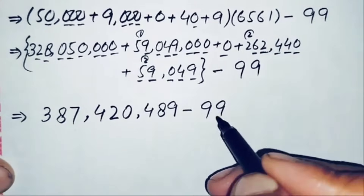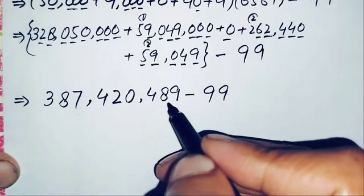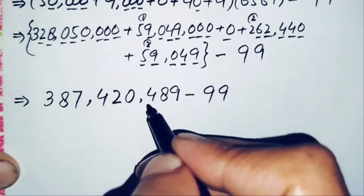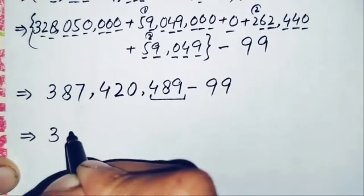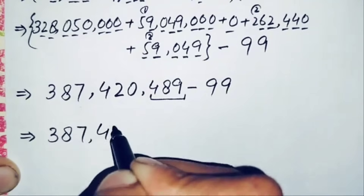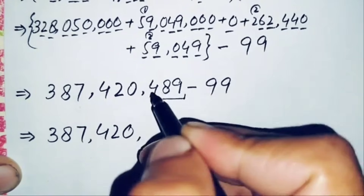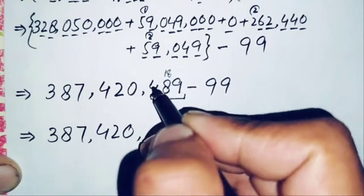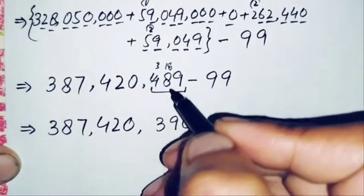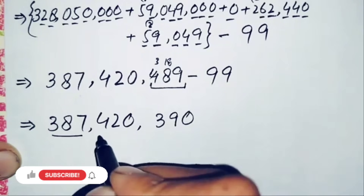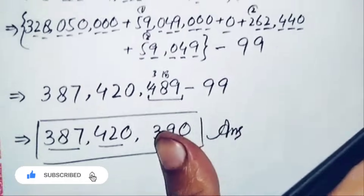Finally, we subtract 99 from 387,420,489. Since 89 minus 99 is not directly possible, we work with the last three digits 489: 9 minus 9 = 0, 18 minus 9 = 9 (borrowing), leaving 3. So the final answer is 387,420,390.